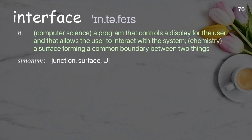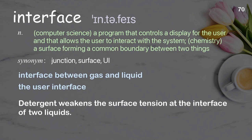Interface: In computer science, a program that controls a display for the user and allows the user to interact with the system; in chemistry, a surface forming a common boundary between two things. Examples: interface between gas and liquid, the user interface. Detergent weakens the surface tension at the interface of two liquids.